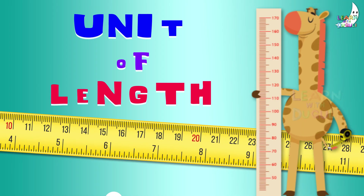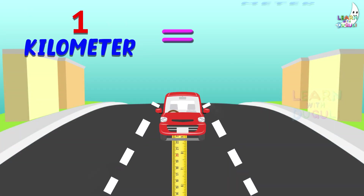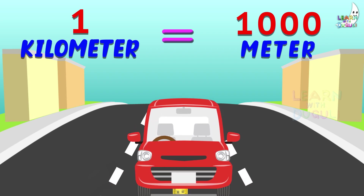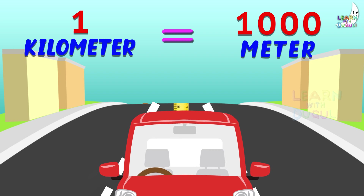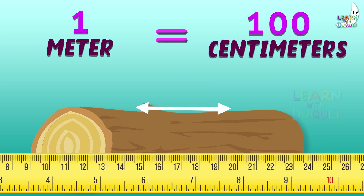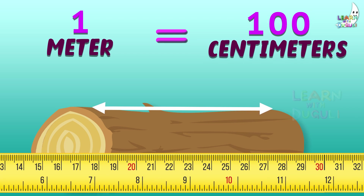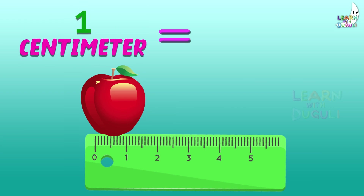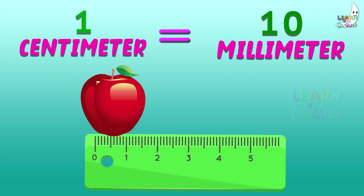Unit of Length: 1 km is equal to 1000 m. 1 m is equal to 100 cm. 1 cm is equal to 10 mm.